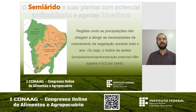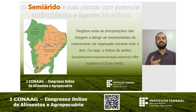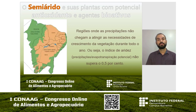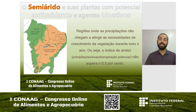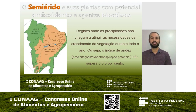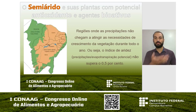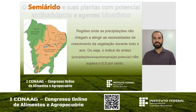Quando falamos de semiárido, entendemos que são aquelas regiões onde a precipitação não chega a atingir a necessidade do crescimento da cultura durante todo o ano. Ou seja, o índice de aridez é menor do que 0,5%. Esse índice de aridez é calculado através da divisão simples entre precipitação e evapotranspiração potencial.